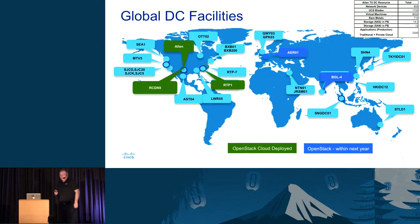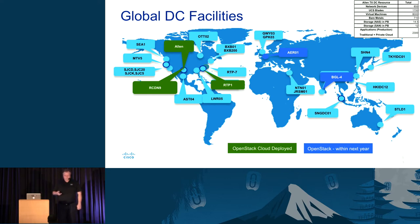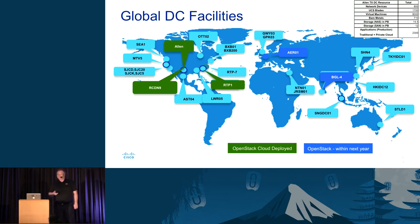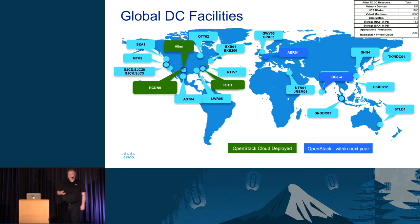In Cisco, we have many data centers all over the world. Our first year, we deployed into three of our US facilities: our RTP, or Research Triangle Park data center, which is a non-production data center very close to the campus there, and we also deployed into our Allen and Richardson Texas data centers, which are our production data centers running our most critical applications for Cisco. Within the next year, we plan on deploying into Amsterdam and India for support of applications in those geos.